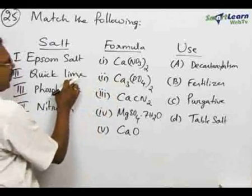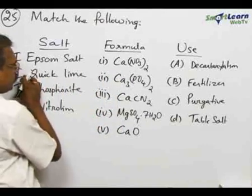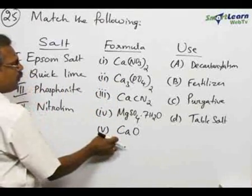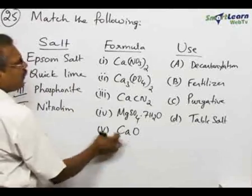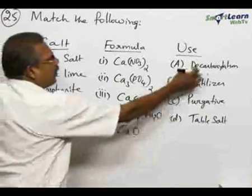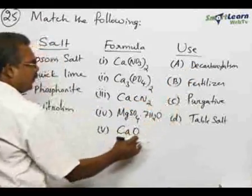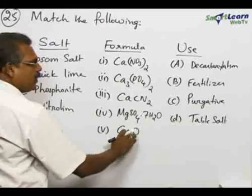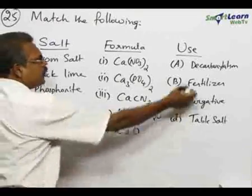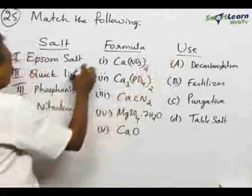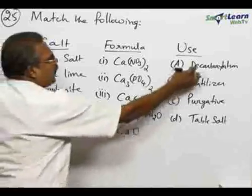Quick lime is calcium oxide, CaO. So quick lime and CaO should be matched, and quick lime is used for decarboxylation purposes. In the form of soda lime, CaO plus sodium hydroxide combination is used for decarboxylation. Therefore: quick lime, CaO, decarboxylation.